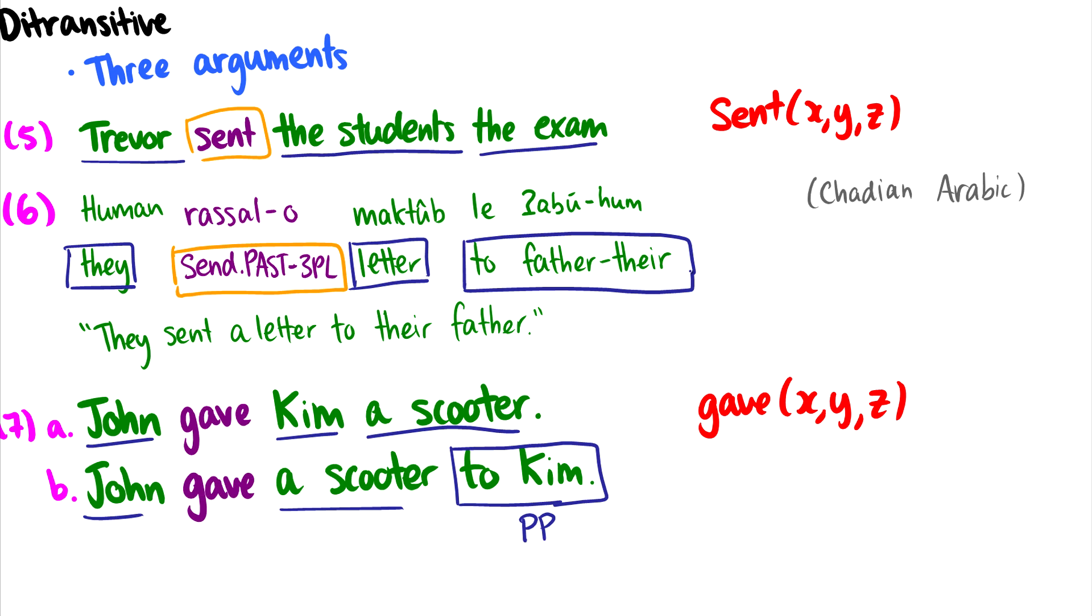Hopefully we can distinguish between three different types of verbs. Again, their logical representation here, you don't have to know this too much. But if you do look at my mathematical linguistics course, you'll see these representations all the time in semantics. Just to kind of expose you to them now, I think is beneficial. If you don't understand them quite yet, you're not really familiar with math, don't worry about it for this course.